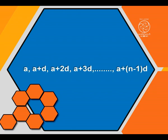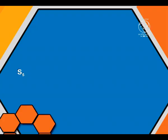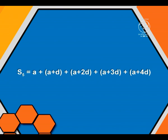Now we will be taking the sum of the first 5 terms from this sequence. What will be the sum of first 5 terms? S5 is represented as A plus (A plus D) plus (A plus 2D) plus (A plus 3D) plus (A plus 4D).